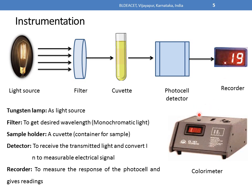This is how a typical colorimeter looks like. You can see a small hole which is the sample holder — in that sample holder the cuvette containing the solution is placed. From the light source, light is passed through the filter and made to fall on the solution. The transmitted light is detected by a photocell detector, which converts it into an electrical signal, and that signal is displayed by the recorder as an absorbance or optical density value.